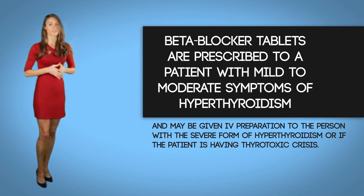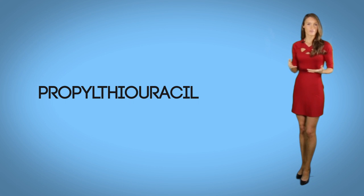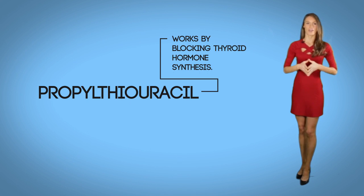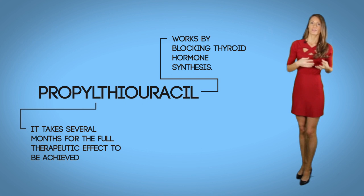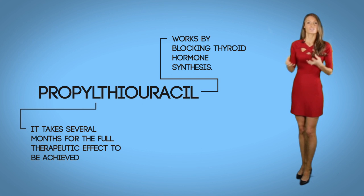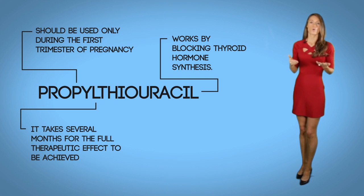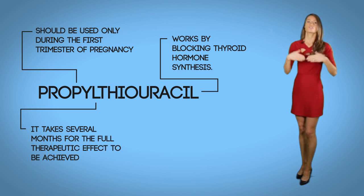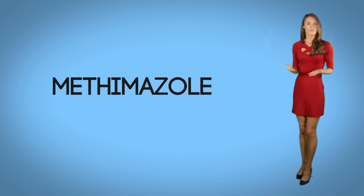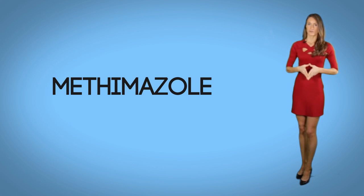A patient having a thyroid toxic crisis — also called a thyroid toxic storm — may also receive IV beta blockers. Propylthiouracil (PTU) is an antithyroid drug that works by blocking thyroid hormone synthesis. It takes several months for the full therapeutic effect to be achieved. The US FDA has issued guidance that this drug should only be used during the first trimester of pregnancy or if there is an intolerance to methimazole.